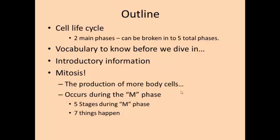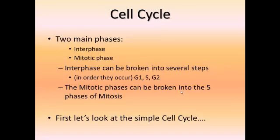Mitosis is the production of more body cells, or somatic cells. Mitosis occurs during the M phase of a cell's life cycle, and there are five stages during this M phase where seven different things happen. The cell cycle has two main phases: interphase and the mitotic phase. Interphase can be broken into several steps — mainly G1, S, and G2. The mitotic phase can be broken into the five specific phases of mitosis.